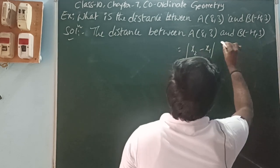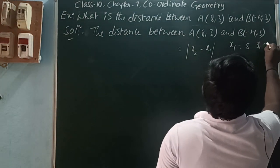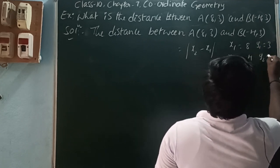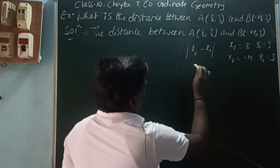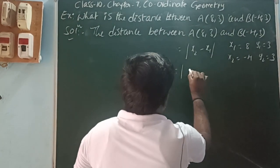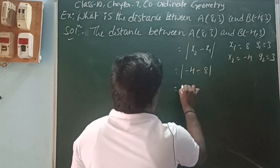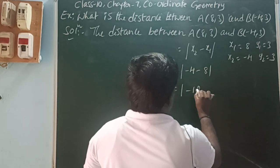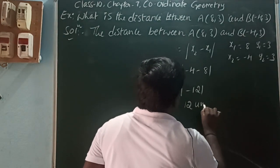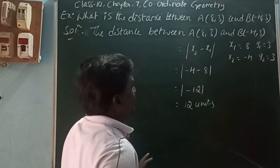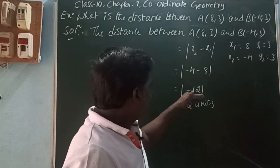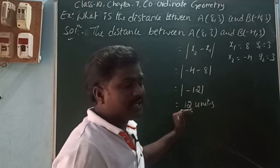In these two points, x1 = 8, y1 = 3, x2 = -4, y2 = 3. The y-coordinate is the same. So x2 minus x1 is -4 minus 8 = -12. Modulus of -12 is 12. So the distance between A(8, 3) and B(-4, 3) is 12 units.